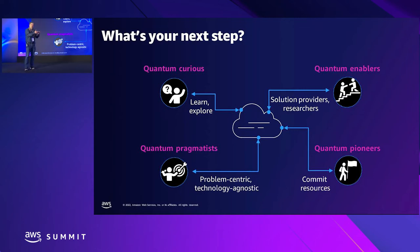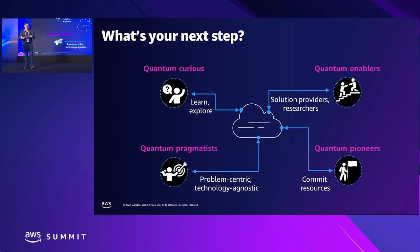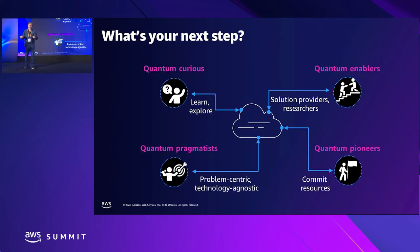The question 'how does success look like for me as an industry leader?' has different answers depending on which persona you are. The quantum curious want to learn, explore, and understand the state of the art. The quantum pioneers are people who hire teams, invest resources, and commit — they sponsor research in academia and try to push the field itself.